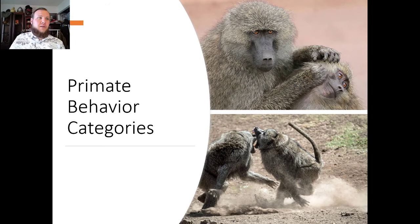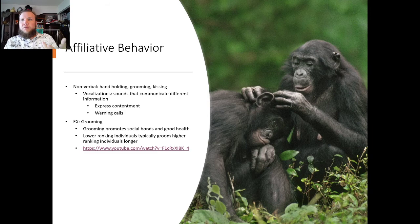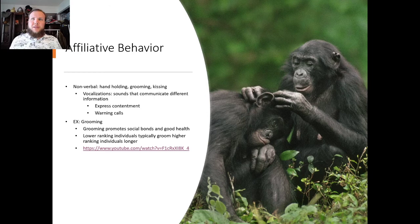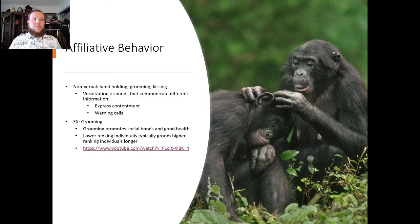Now we'll get into behavior. There are two primary categories: affiliative and aggressive behavior. Affiliative behavior can be nonverbal — such as handholding and grooming — and also vocalizations, to show contentment or to warn about predators or any other harmful agent. There are also examples of males hunting together in packs and patrolling their territory. Grooming promotes social bonds and good health, and lower-ranking individuals typically groom higher-ranking ones.